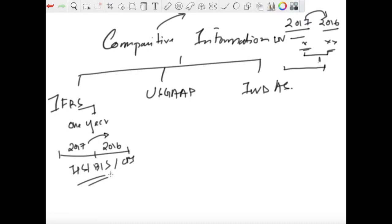So it requires at least one prior period details of any numerical data that is given in the financial statements. So it requires at least a disclosure for one year.